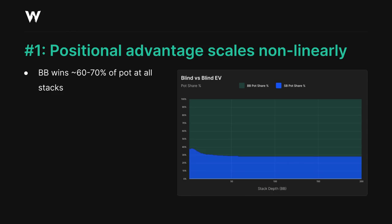You can see that the big blind is winning between about 60 and 70% of the pot at all stack sizes, which is approximately what we might expect. The two players are playing heads up, but one is guaranteed to be out of position, so that's a pretty big disadvantage.